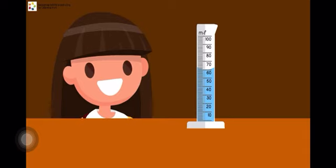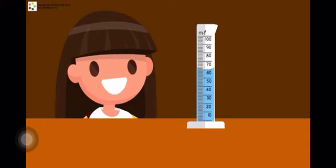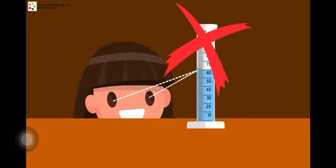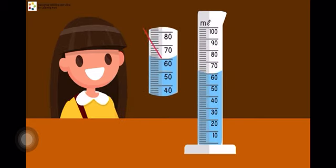When reading the volume of a liquid in a graduated cylinder, always read from the eye level. Don't look up or down as they will give you wrong readings. Always read the lower curvature for the correct reading.